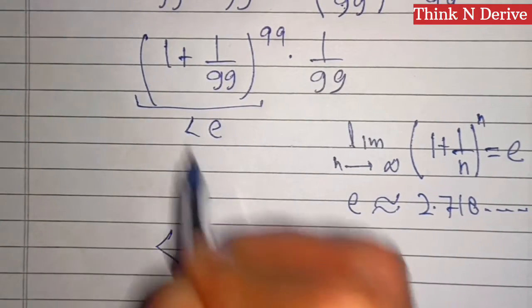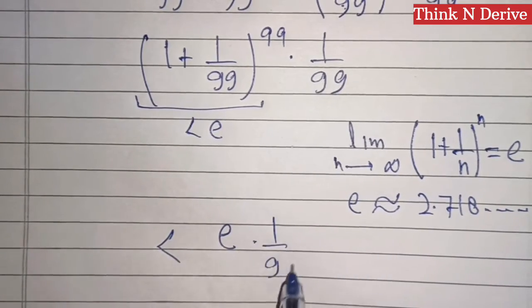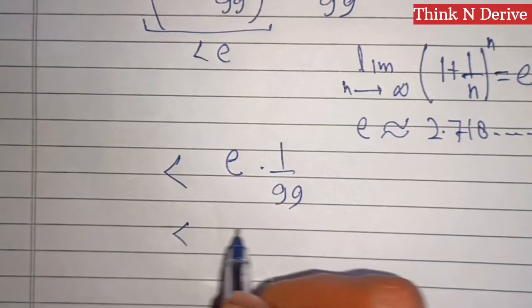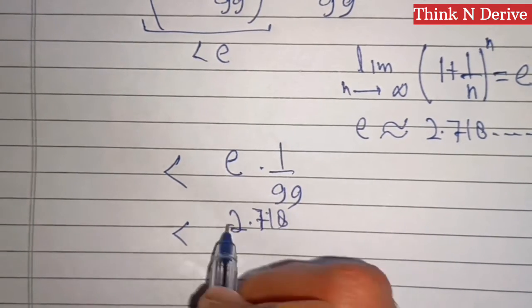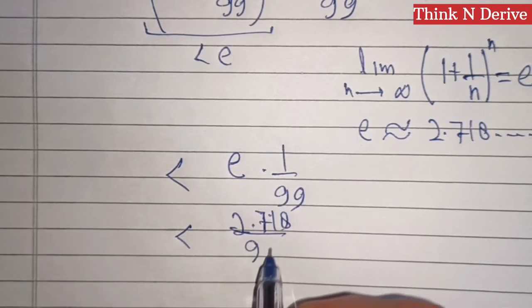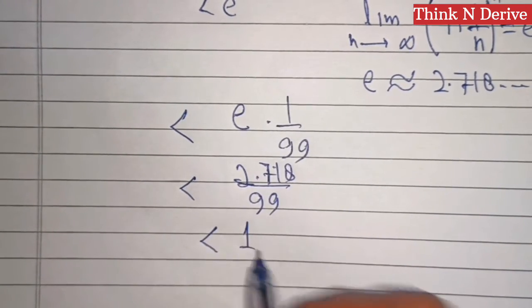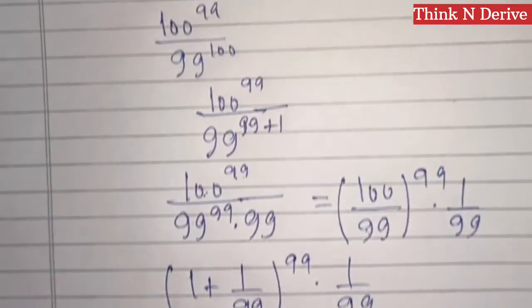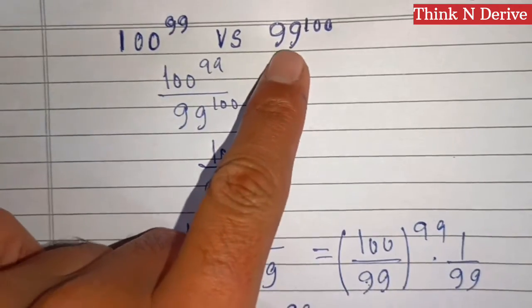Now put the value of e: 2.718 over 99, which is less than 1. So that means 100^99 is less than 99^100.